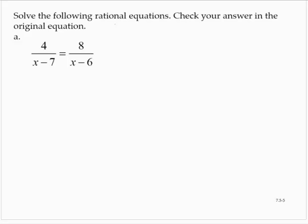Solve the following rational equations. Check your answer in the original equation. 4 over x minus 7 is equal to 8 over x minus 6.